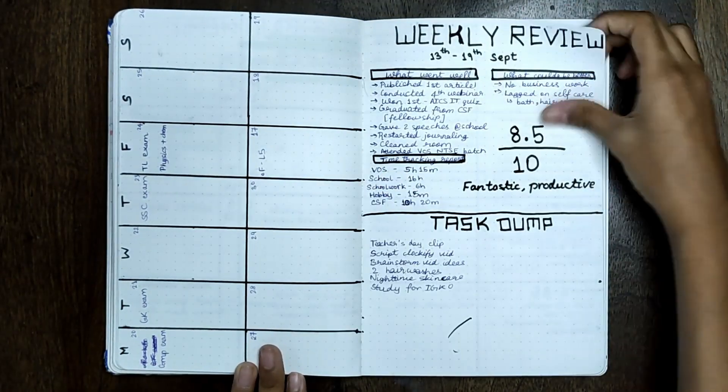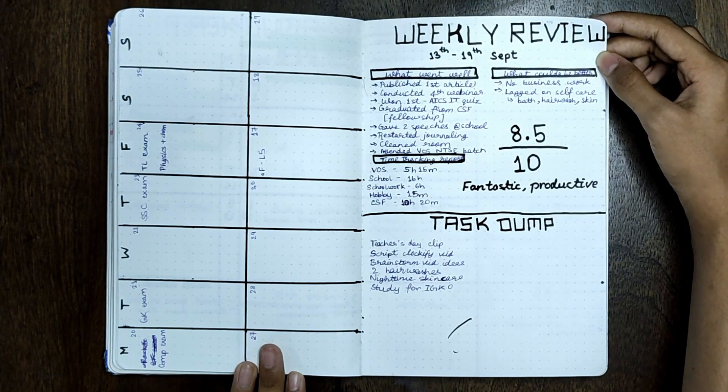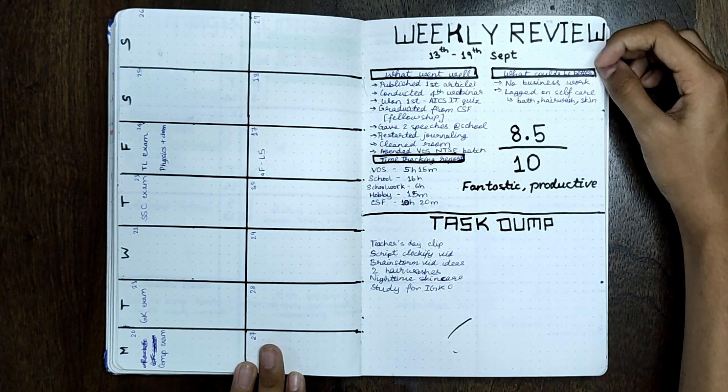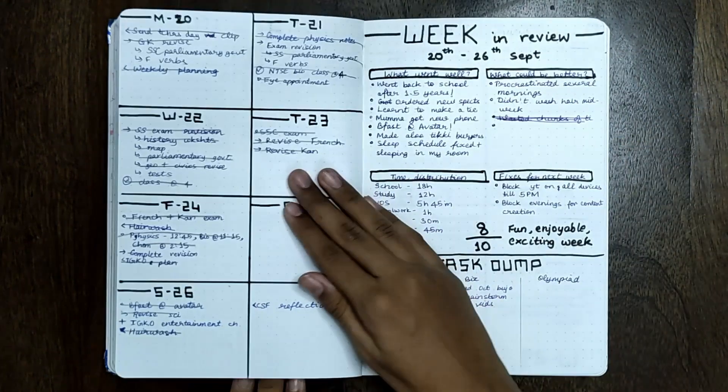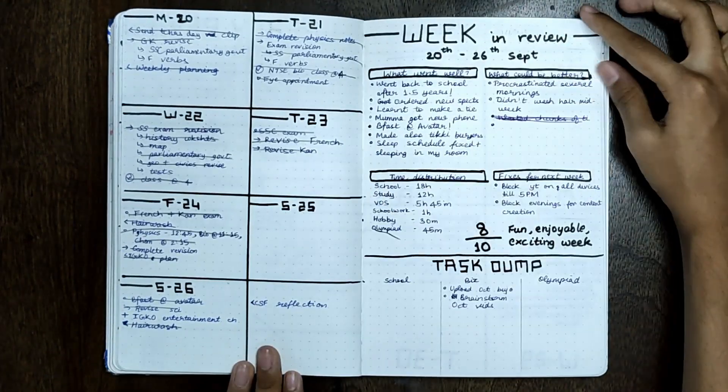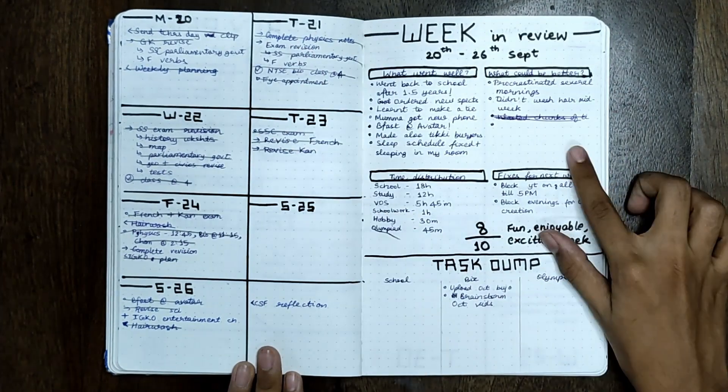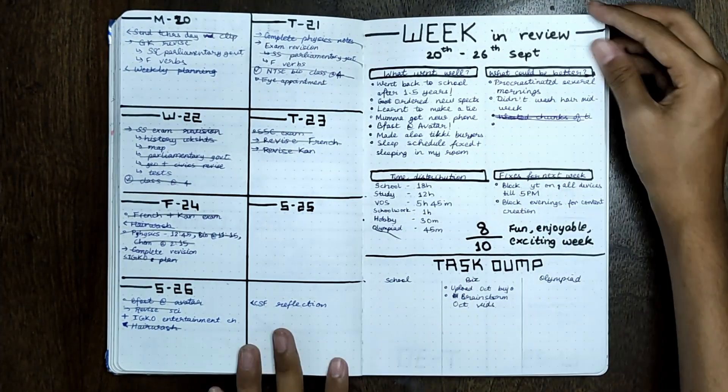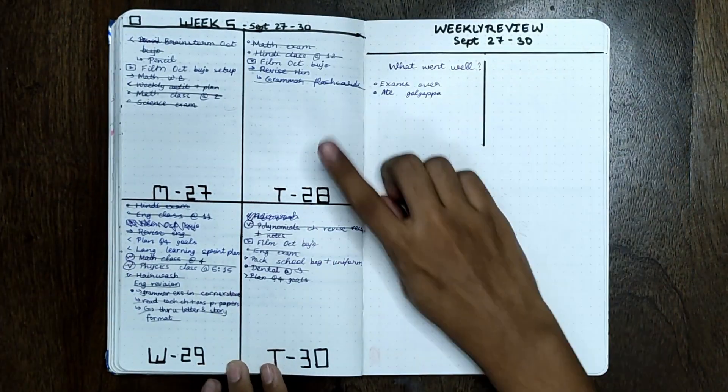Then again I have space to plan out to-do lists each day, and then I have a review for one of the weeks of September. Again, I have a few to-do lists and weekly reviews. I think in September most of my bullet journal was just about to-do lists and reviewing the week.